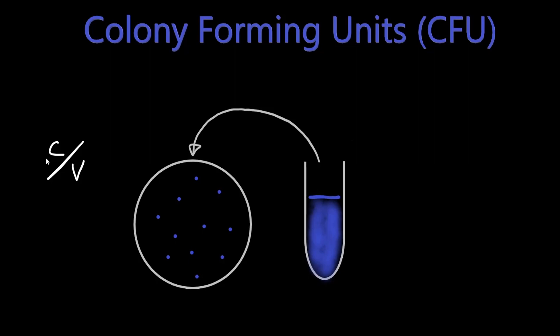So this is the number of colonies and the volume of aliquot. Now the standard measurement they use is CFU per mil. For example, if the volume we took was 1 milliliter of the original bacterial culture, our CFU per mil would just be 11 CFU per mil.